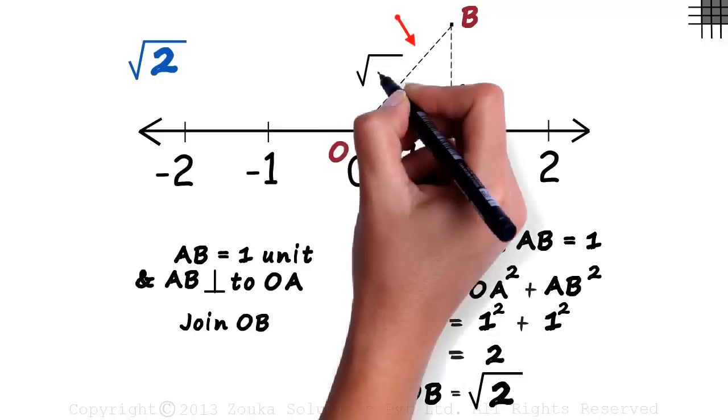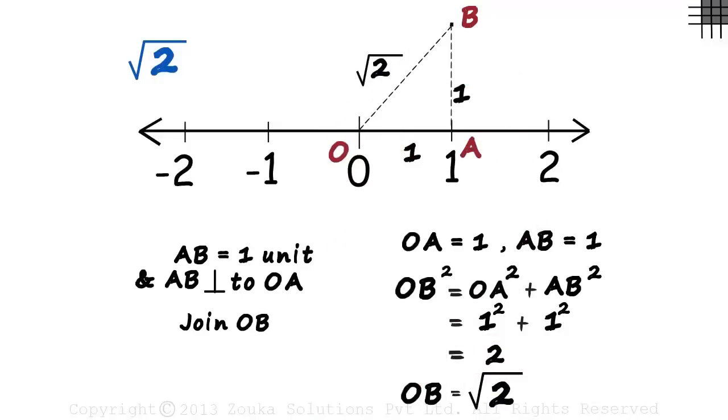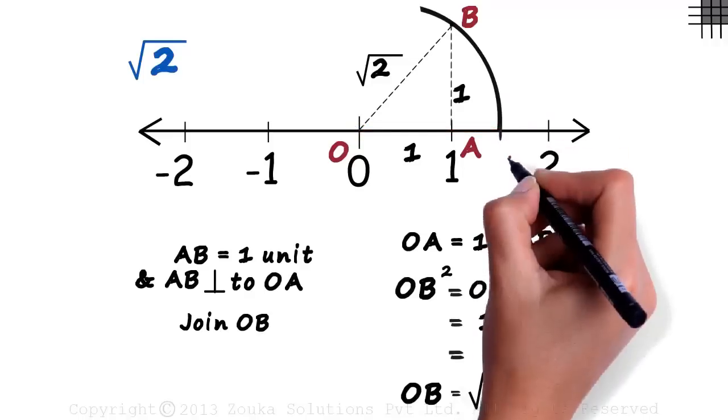This length will be root 2 units. We just need this length on the number line. To do that, we keep the vertex of the compass here and with length OB cut an arc on the number line. Let's call this point C.